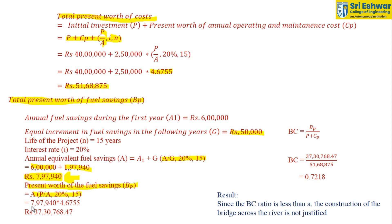The present worth of fuel savings B_P is given by A × (P/A, 20%, 15). The factor (P/A, 20%, 15) from the data book equals 4.6755. Therefore, B_P equals Rs. 37,30,768.47.